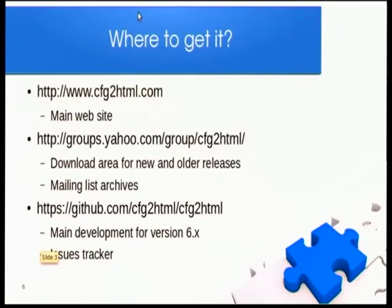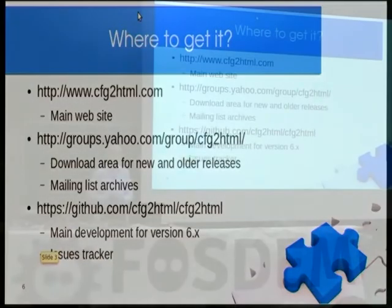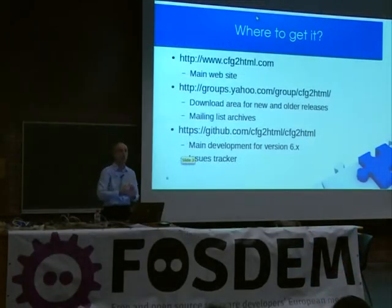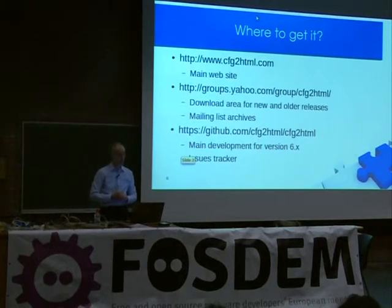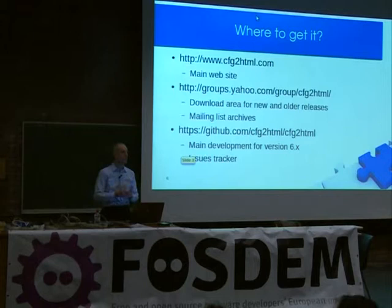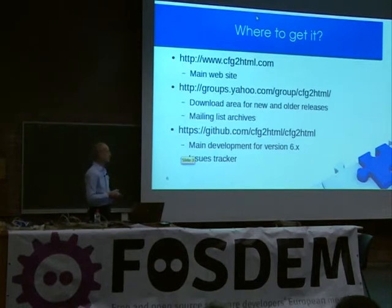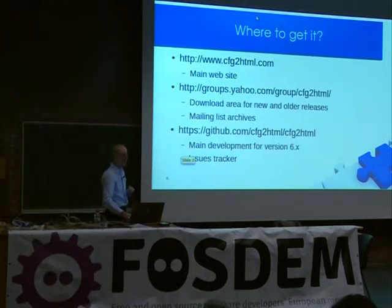Where can you get it? There's a main website maintained by Rolf, there are also mailing lists — quite old, with a lot of history. The latest version 6 is on GitHub — you can just clone it and start working with it. There are also issue trackers. I really like the GitHub issue trackers because, for me, it's the main tracking for all issues, since this is not the only open source project I work on. If you have an issue, just make an issue ticket.